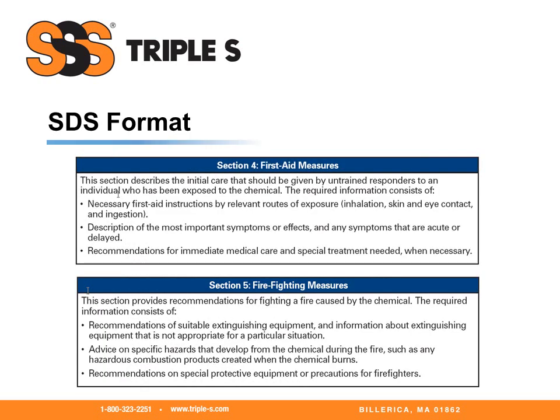Section four, first aid measures. This section describes the initial care that should be given by untrained responders to an individual who has been exposed to the chemical. The required information consists of necessary first aid instructions by relevant routes of exposure, description of the most important symptoms or effects, and recommendations for immediate medical care and special treatment needed when necessary.